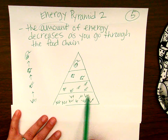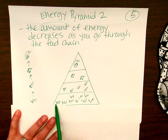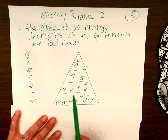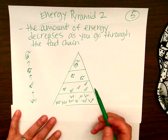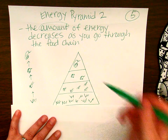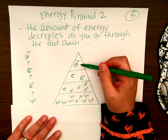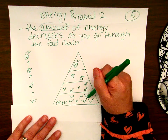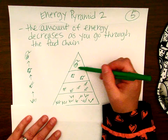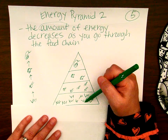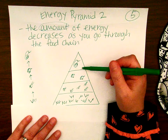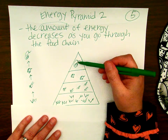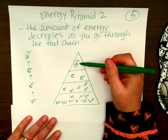There's so much available energy at the bottom because there's so much grass, plants, trees, shrubs, and vegetables all over the world. Now think about how many snakes there are — definitely not as many as grass blades. The higher you go through the food chain, the less available energy there is.